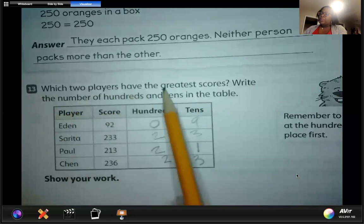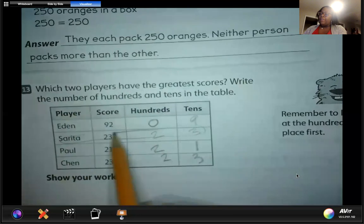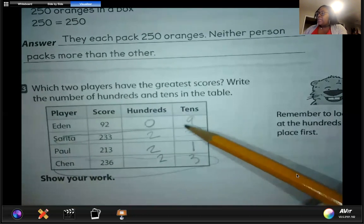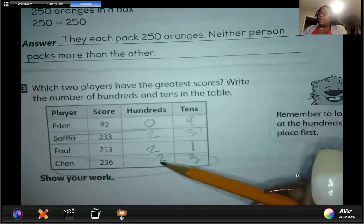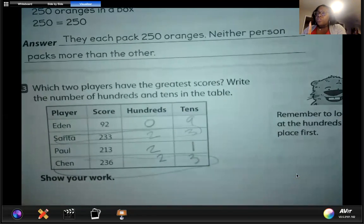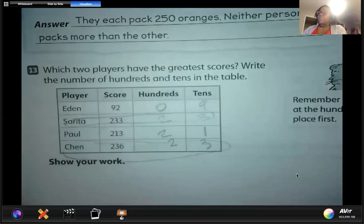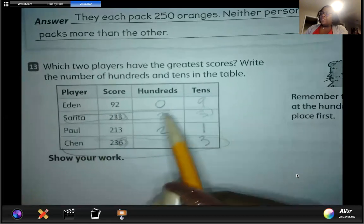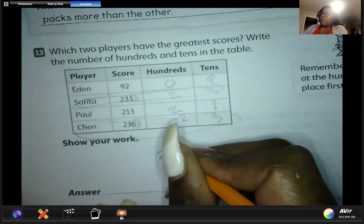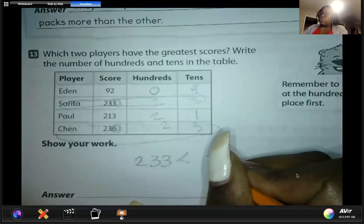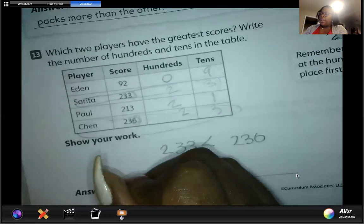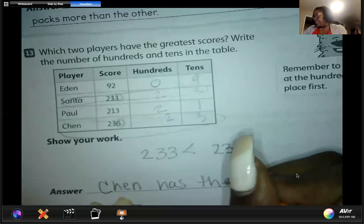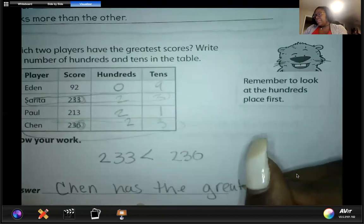Which player has the greatest number? We can see right off the bat that it's going to be out of Sarita and Chan. Both of these numbers have the same number in the hundreds and the tens place. Where do we look next? That's right, we look at the ones place. She has a three while he has a six. So that shows us that 233 is less than 236. Chan has the greatest score.